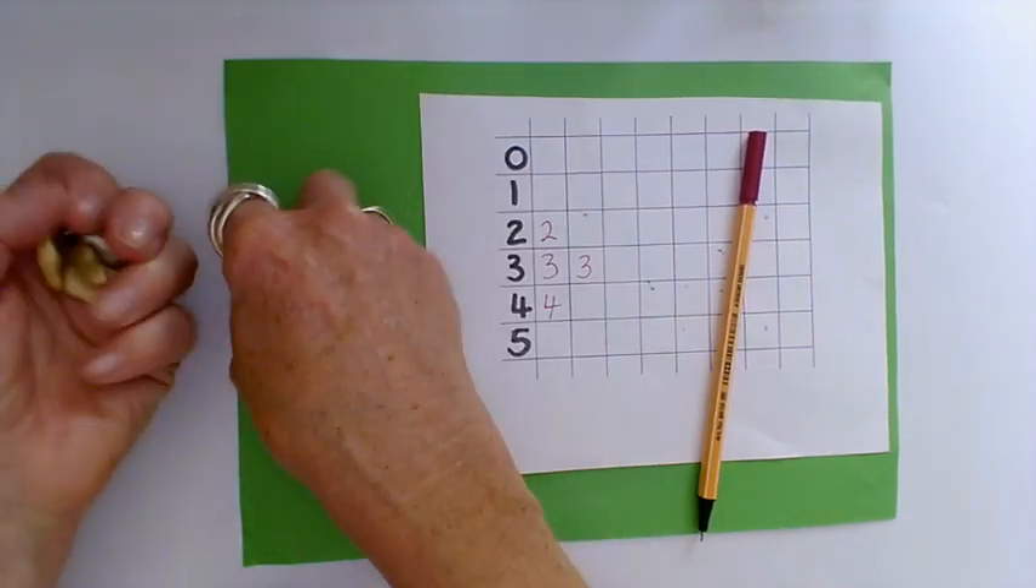Throw them again. This time I have four that have landed gold up. Another three that's landed gold up. Another two this time. Carry on recording my rolls like this. There's another four.